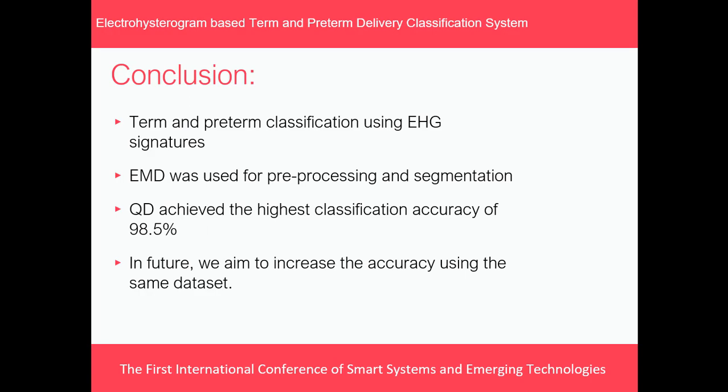To conclude, term and preterm classification using EHG signatures was performed. EMD was used for pre-processing and segmentation, and QDA achieved the highest classification accuracy of 98.5%. In future work, we aim to increase the accuracy further using the same dataset. Thank you so much for listening.